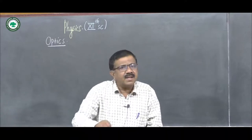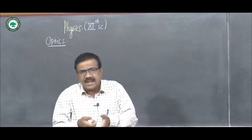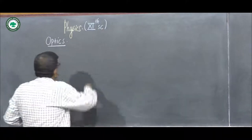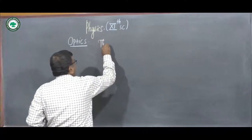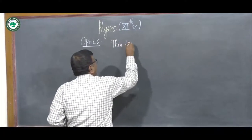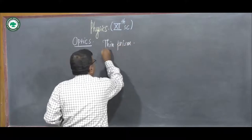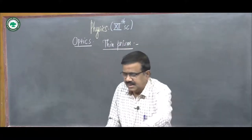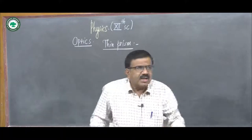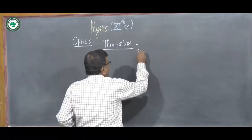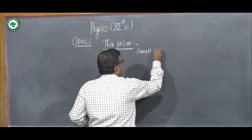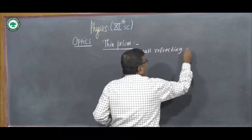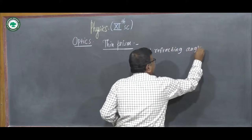Prism is a transparent material bounded by plane surfaces inclined to each other. Today we study about thin prism. A thin prism is a prism having a small refracting angle.